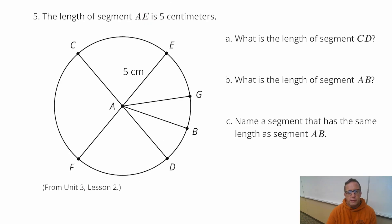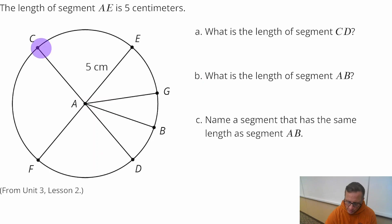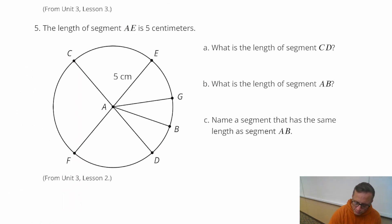We've got for number 5, the length of segment AE is 5. So what is the length of segment CD? So CD is describing, from what it looks like there, CD is describing a diameter, because it's going through the center. And so that's got to be 10, because a diameter is two radii. So that's 5 centimeters, that's 5 centimeters. You don't need a calculator for that. That's 10 centimeters.